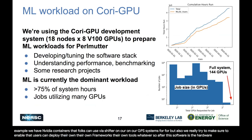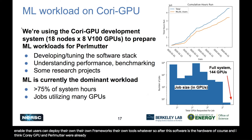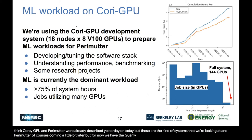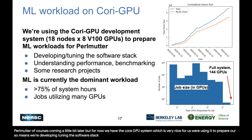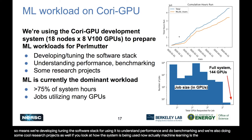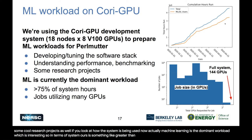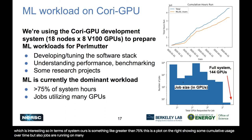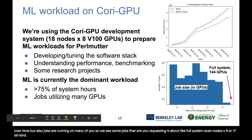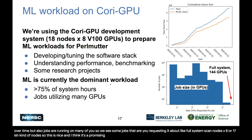On the hardware side, Cori GPU and Perlmutter were already described, with Perlmutter coming a bit later. We're using Cori GPU to prepare machine learning workloads for Perlmutter — developing and tuning the software stack, understanding performance, doing benchmarking, and doing some research projects. Machine learning is the dominant workload on Cori GPU, representing greater than 75% of system hours, and we see some jobs requesting nearly full system scale of around 16-17 nodes times 8 GPUs.